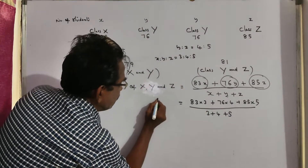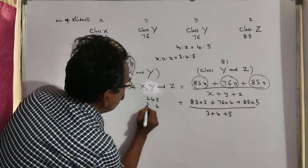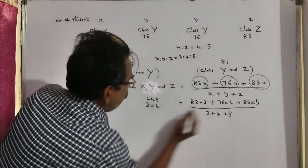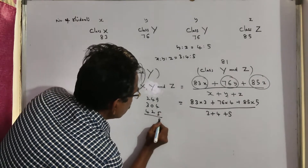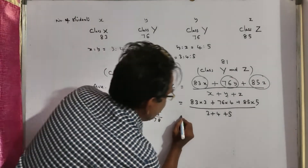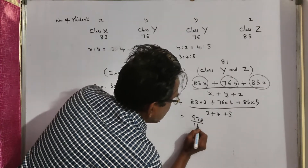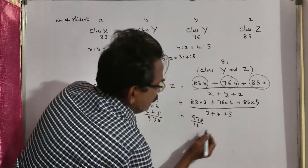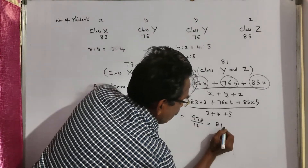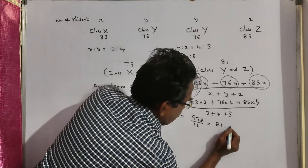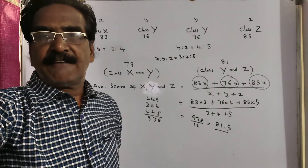83 times 3 is 249; 76 times 4 is 304; 85 times 5 is 425. The sum of scores is 978, divided by total number of students 12. Calculating 978 divided by 12 gives 81.5. So 81.5 is your average, friends.